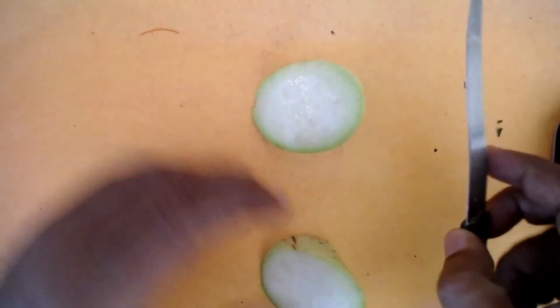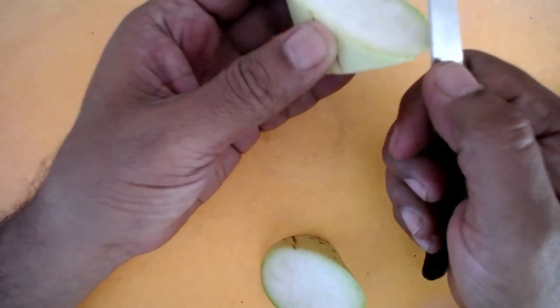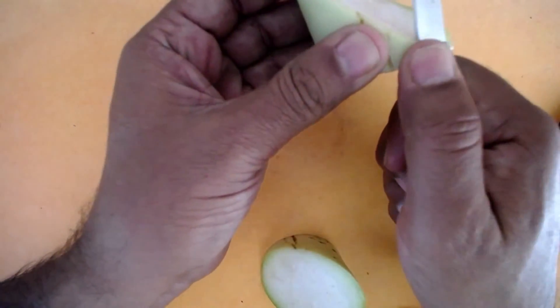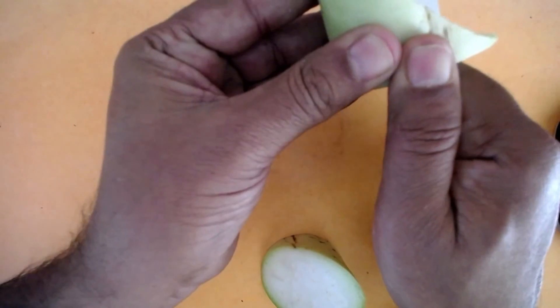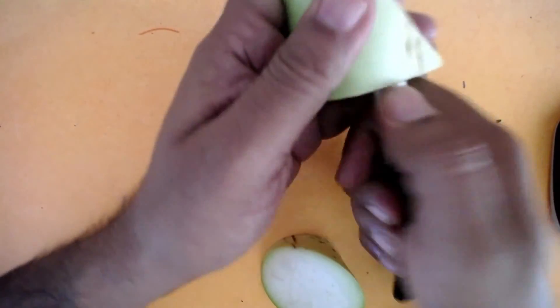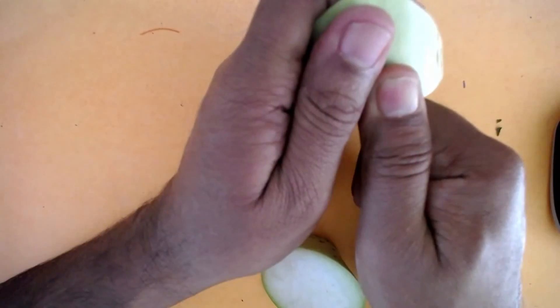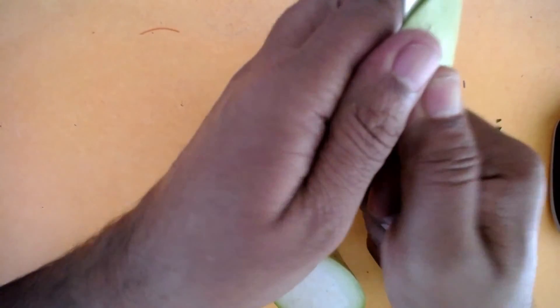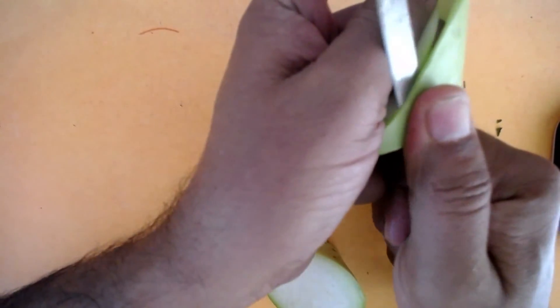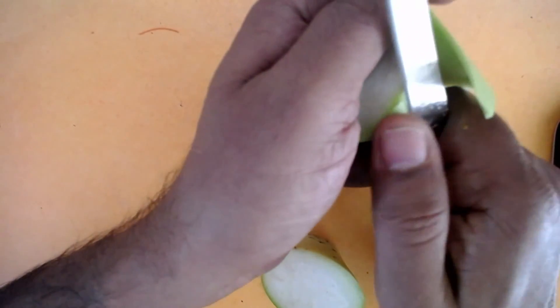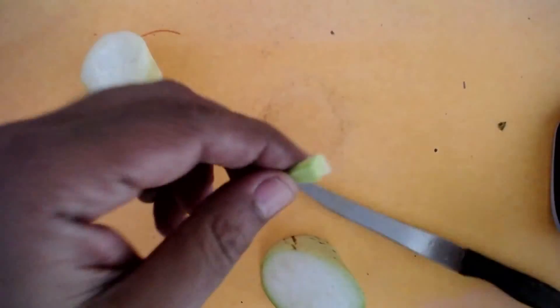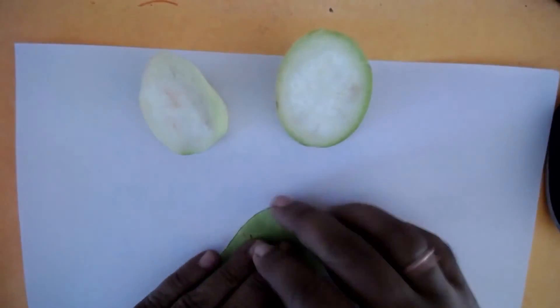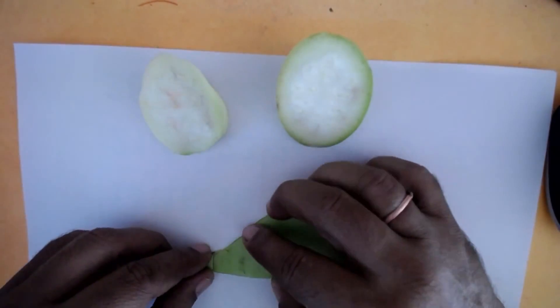But the most magical thing happens if I take this peel out. Let me take the peel out from this, the green part. I didn't want it to be cut, but it did. This is the peel right here.